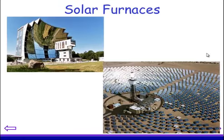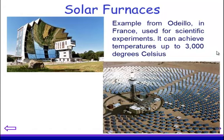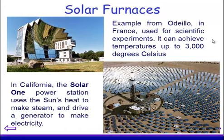A step up from that is solar furnaces. What we have here is a system of mirrors which focuses solar energy on one point to achieve much, much higher energies. The example on the top left is from Odeillo in France — it's used for scientific experiments and can reach 3,000 degrees Celsius. The other example in the desert in California is Solar One, and this is a system which actually heats up water to create steam and then drives a generator to make electricity.